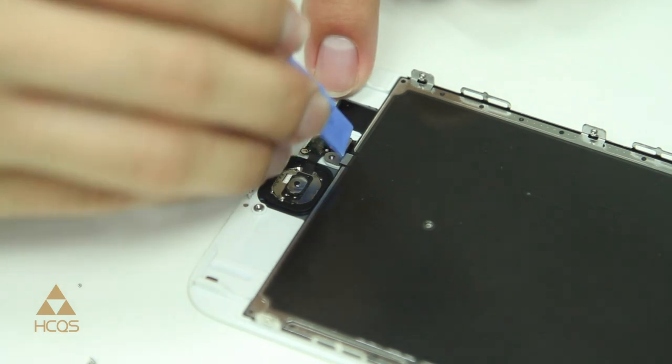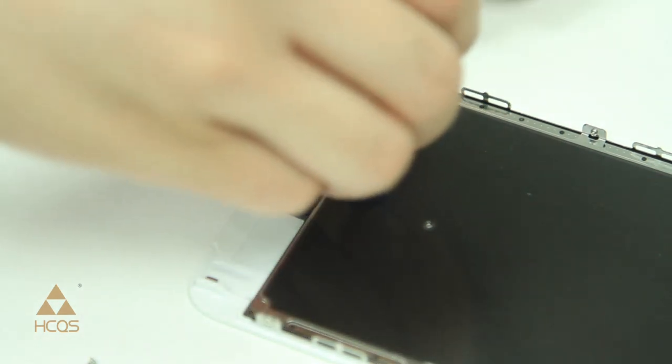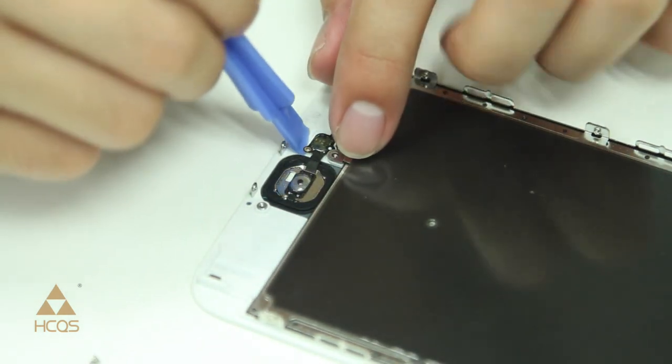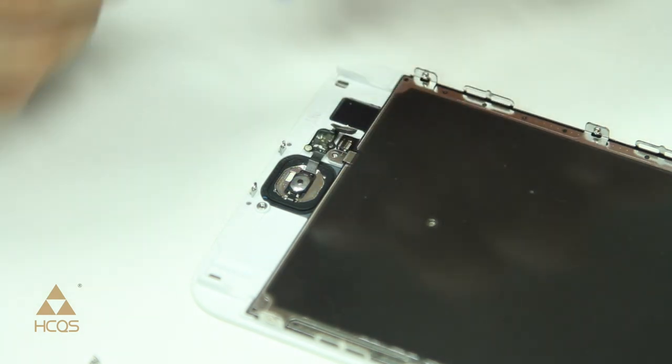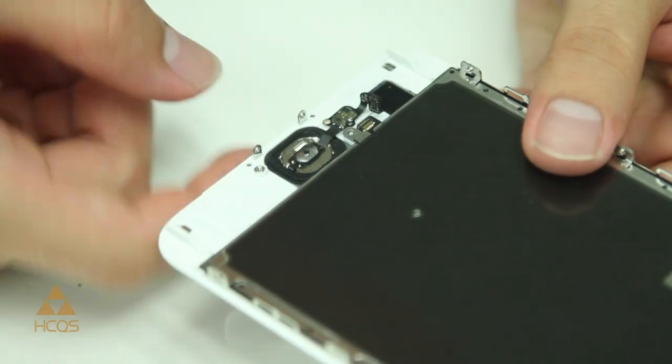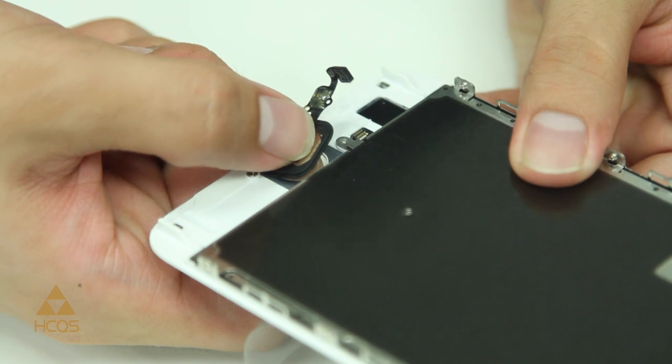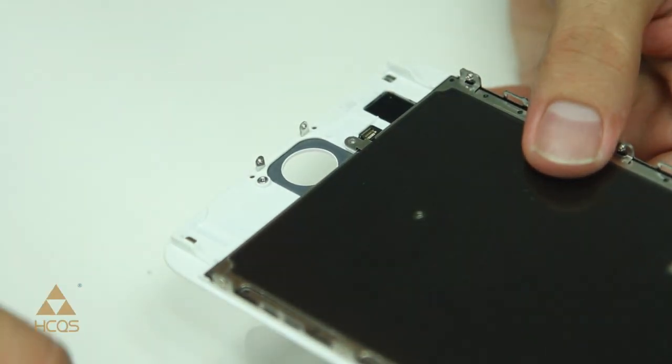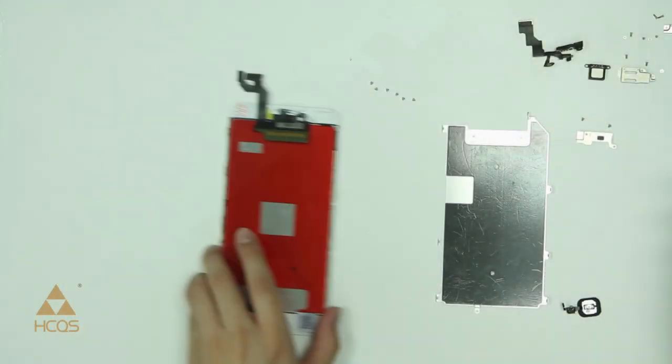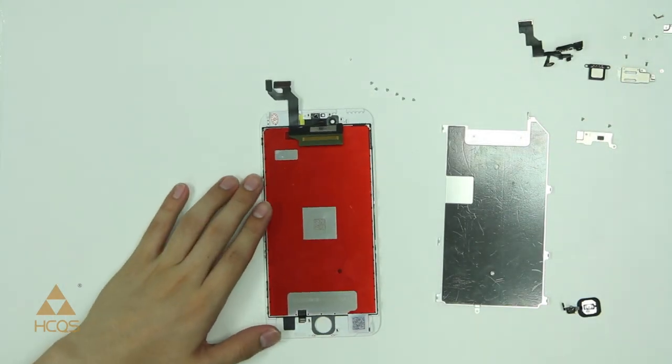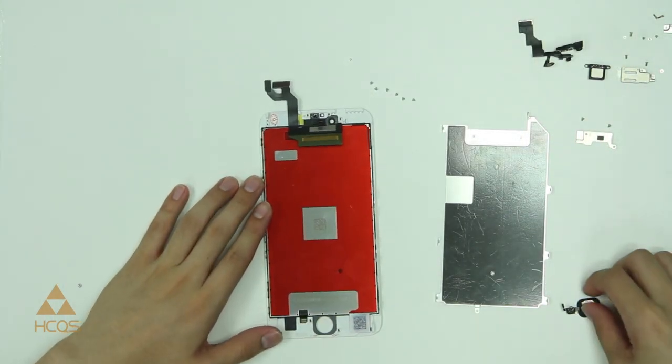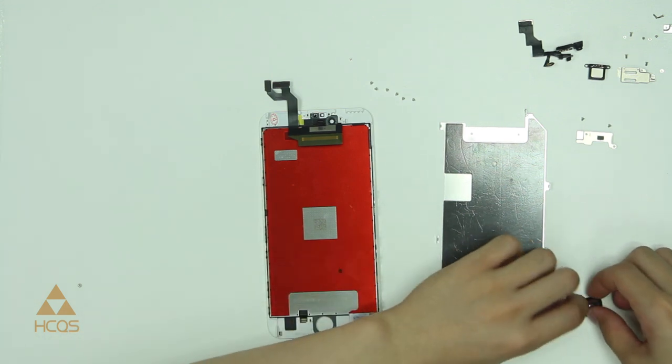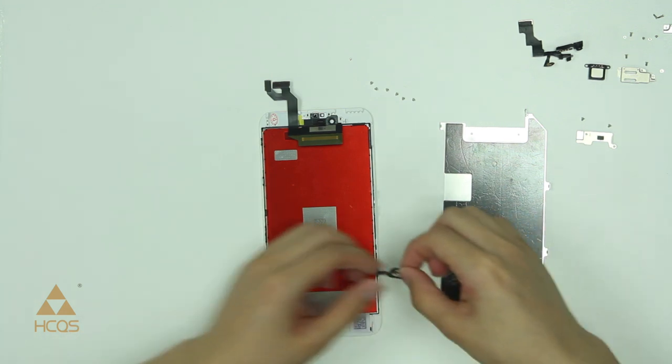From here we're going to disconnect the pop connector that attaches the fingerprint scanner. So be very careful when you do this. If you damage your fingerprint scanner, you will not be able to replace one that scanned your fingerprint. There's some adhesive that holds the button into place, so carefully push against it from the front side of the phone and apply some heat if necessary. We want to keep that adhesive intact for when we transfer the button over to the new display.